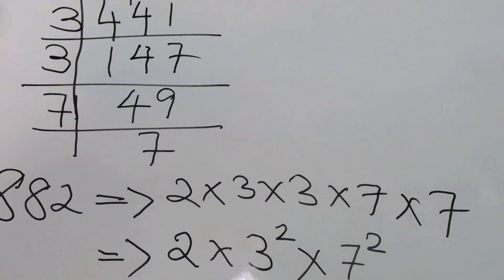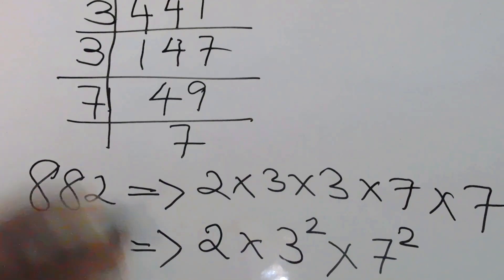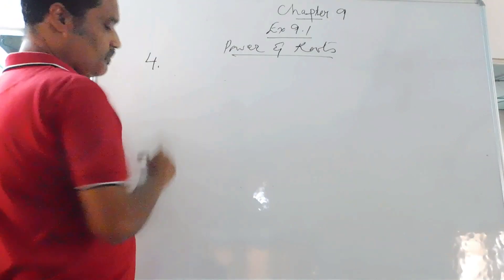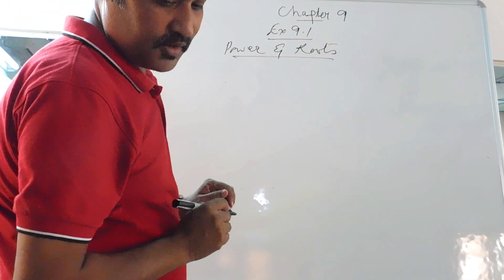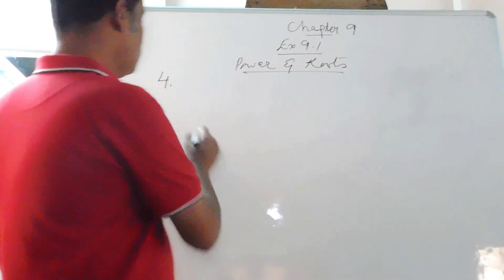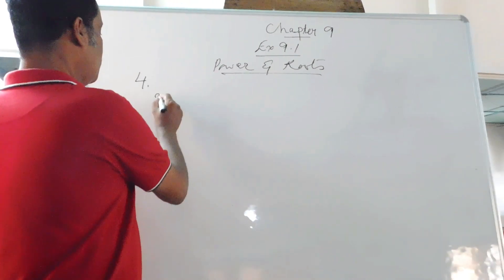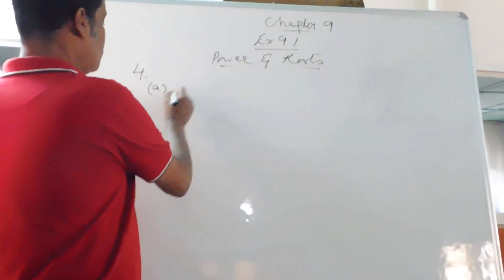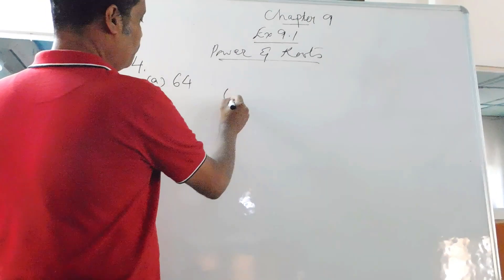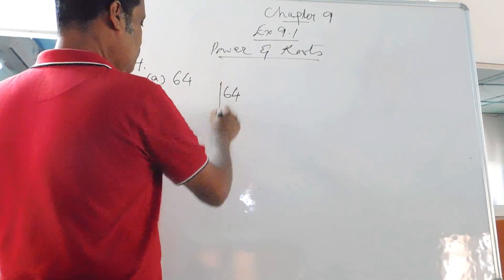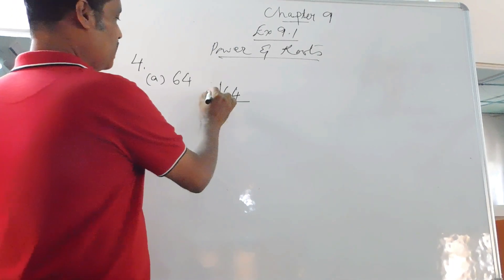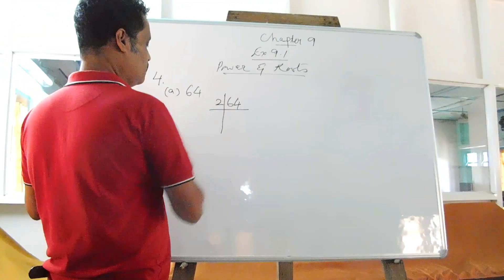Now we will go on to question number 4. Question number 4 is: express the following numbers in exponential form. The first one is 64. So for 64, you factorize it. Since 64 is an even number, you can divide it by 2.